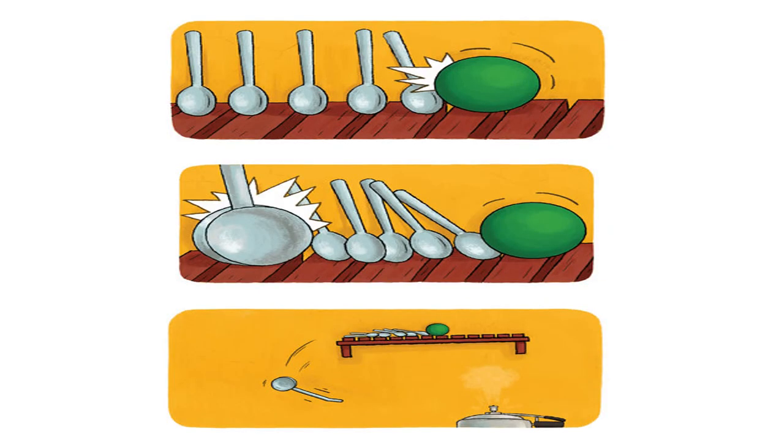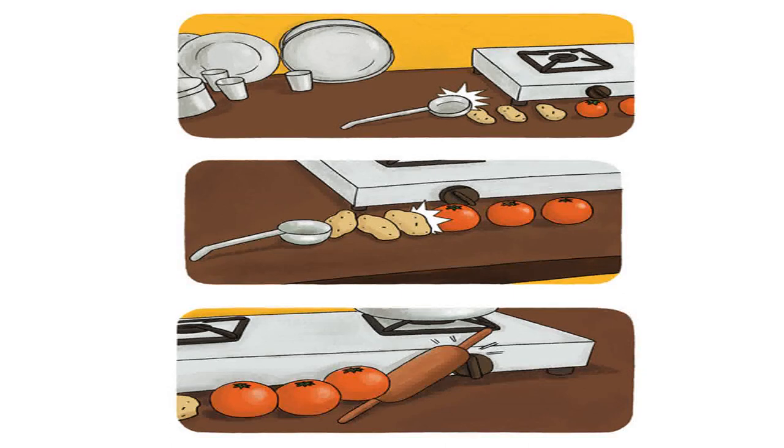The ball hits the spoons. The spoons fall on the ladle. The ladle swings off the shelf. Bluong. The ladle hits the potatoes. The potatoes roll into the tomatoes. The tomatoes crash into the rolling pin. The rolling pin hits the knob of the stove. Thwack.